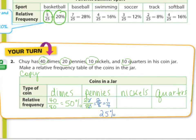Nickels: 10 out of 80, which is one-eighth. And quarters is also 10 out of 80, which is one-eighth. I need to change that to a percent, so I'm going to come up here.